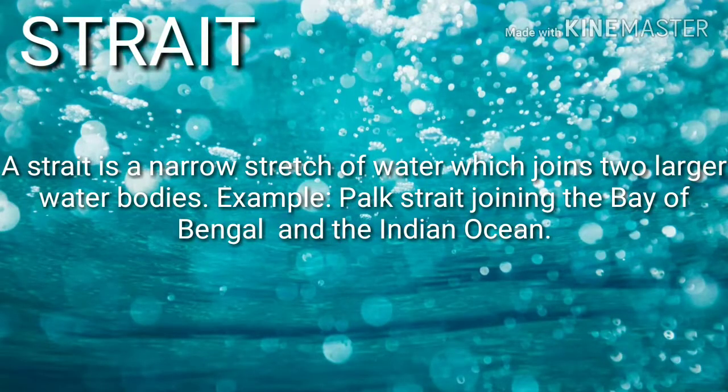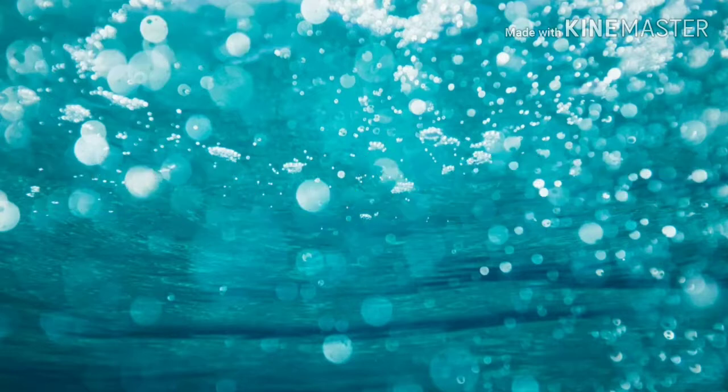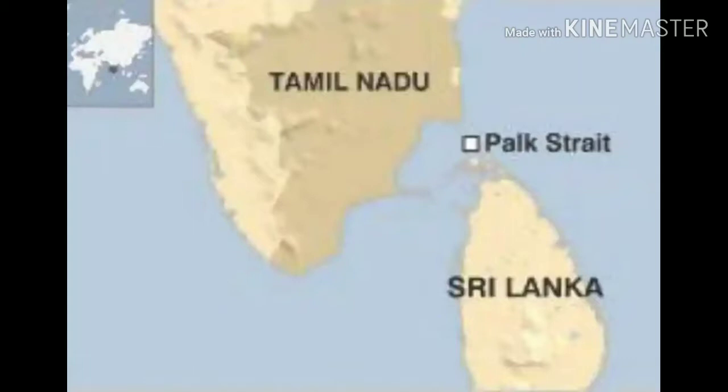Strait: A strait is a narrow stretch of water which joins two larger water bodies. For example, Palk Strait, joining the Bay of Bengal and the Indian Ocean. The map shown here highlights Palk Strait.